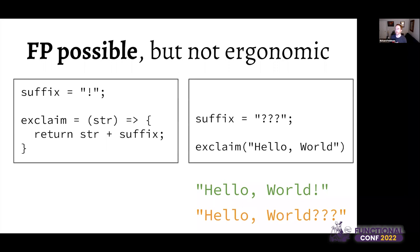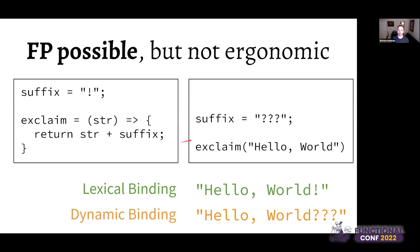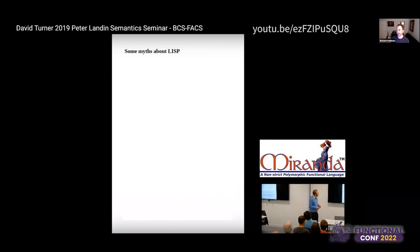Let me give another example using JavaScript syntax for familiarity. Say we have a variable suffix equals exclamation point, and a function called exclaim that takes a string and returns it with that suffix. In a language with lexical closures, even if there's another locally scoped variable named suffix near the call site, exclaim will still use the suffix from its definition site — returning 'hello world!' not 'hello world?'. That's lexical scoping — what matters is what was in the source code around the definition.